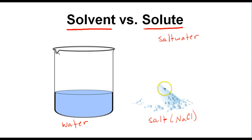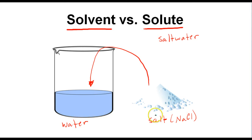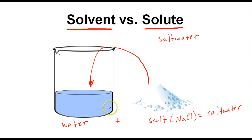We have some water here and some salt here. What we're going to do is put the salt in this beaker and stir it up to make a solution of salt water. Eventually we're going to have a solution of salt water that is nice and evenly mixed, so that a sample of the salt water solution from one part will be identical to a sample from another part. So the two main parts of a solution are the solvent and the solute — which of these would be which?